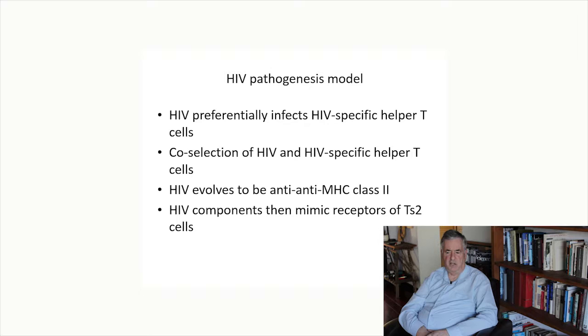To summarize our HIV pathogenesis model: HIV preferentially infects HIV-specific helper T cells through co-selection of HIV and HIV-specific helper T cells. HIV evolves to be anti-anti-MHC class 2, and HIV components that mimic the receptors of TS2 are selected.